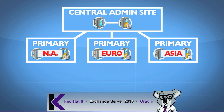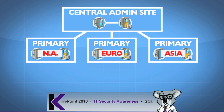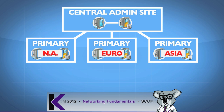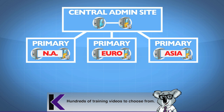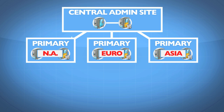Data from each of these regions will flow up to the Central Administration Site — site-based data — so we can have global reporting at the central location. I can run reports about clients across all regional locations. I can also manage from the central location by creating new rules and policies, and that configuration will replicate downward. This is what we call global data — it replicates downward, configuring each of those primary sites.